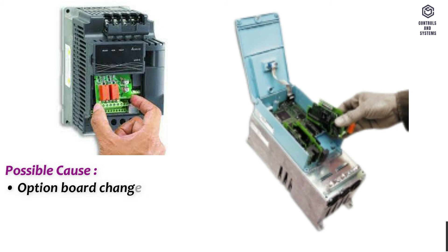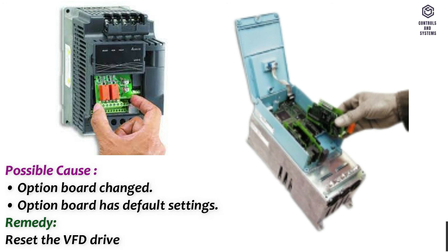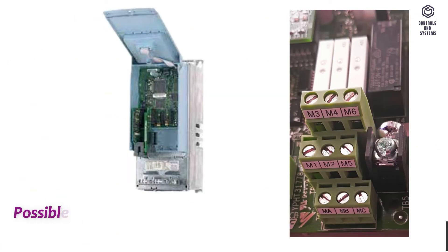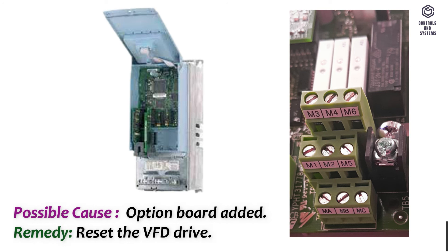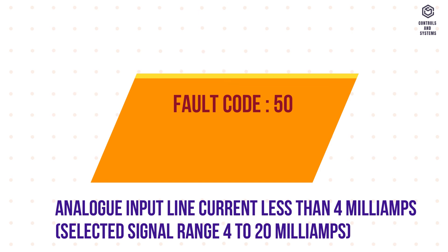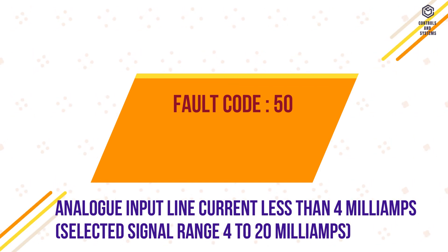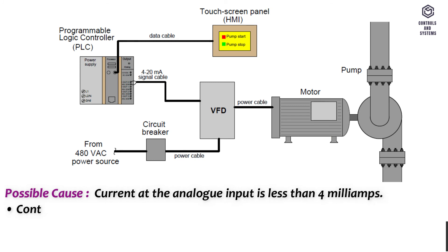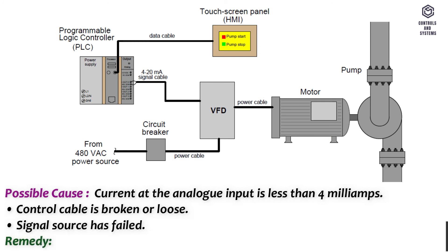Fault code 44 – Device change. Possible cause: option board has default settings. Remedy: reset the VFD drive. Fault code 45 – Device added. Possible cause: option board added. Remedy: reset the VFD drive. Fault code 50 – Analog input line current less than 4 milliamps (selected signal range 4–20 mA). Possible cause: current at the analog input is less than 4 milliamps; control cable is broken or loose; signal source has failed. Remedy: check the current loop circuitry.